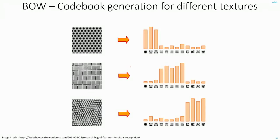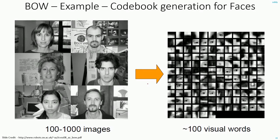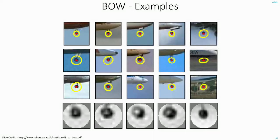Some more examples of bag of visual words: in three images with different textures, you can combine all the features to form a codebook, and the histogram for each image will look distinct. By looking at which codebook entries dominate each histogram, you can decide what kind of pattern it is. Similarly, you can create bag of words histogram representations for faces, or for features like airplane landing gear. Once you extract the features, you cluster them using k-means, create codebooks from the clusters, draw histograms, and by looking at the histograms you can conclude what kind of image it is. That's the main advantage of the bag of visual words representation.